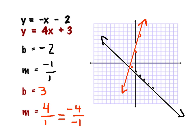Now that my lines are graphed, I can see that the black line and the red line intersect right around here. Looking at what that ordered pair is, I can tell that it is at negative 1, negative 1. So I'm going to write my solution as an ordered pair: negative 1, negative 1.